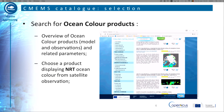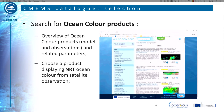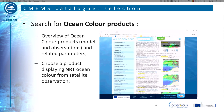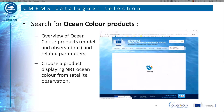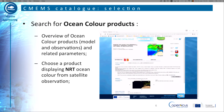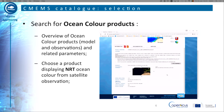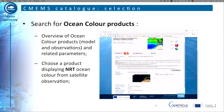Choose the product relative to near real-time chlorophyll in the Atlantic by clicking on More Information. You access the product page of the selected product. To reach the Python command line, click on Download Product. You can modify the requested date and then click on Download.